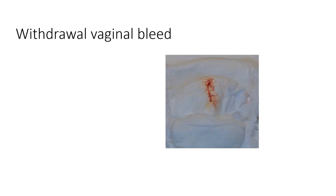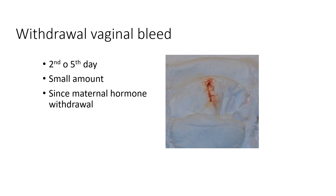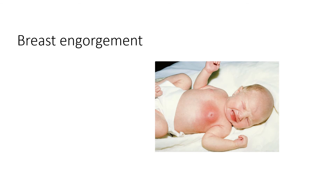Next is withdrawal vaginal bleed. This occurs usually around the second to fifth day of life. It is small in amount and is usually due to maternal hormone withdrawal — that is, the newborn is no longer under the influence of maternal estrogen. Hence, there occurs a withdrawal shedding of the endometrium.